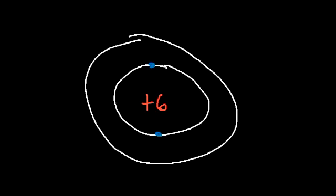Surrounding the nucleus you have different energy levels. In the first energy level, carbon has two electrons — that's the greatest number of electrons you can have in the first shell. In the second shell, or second energy level, carbon has four electrons. The electrons are outside of the nucleus; they're orbiting the nucleus.